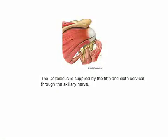The deltoid muscle is supplied by the 5th and 6th cervical nerves through the axillary nerve.